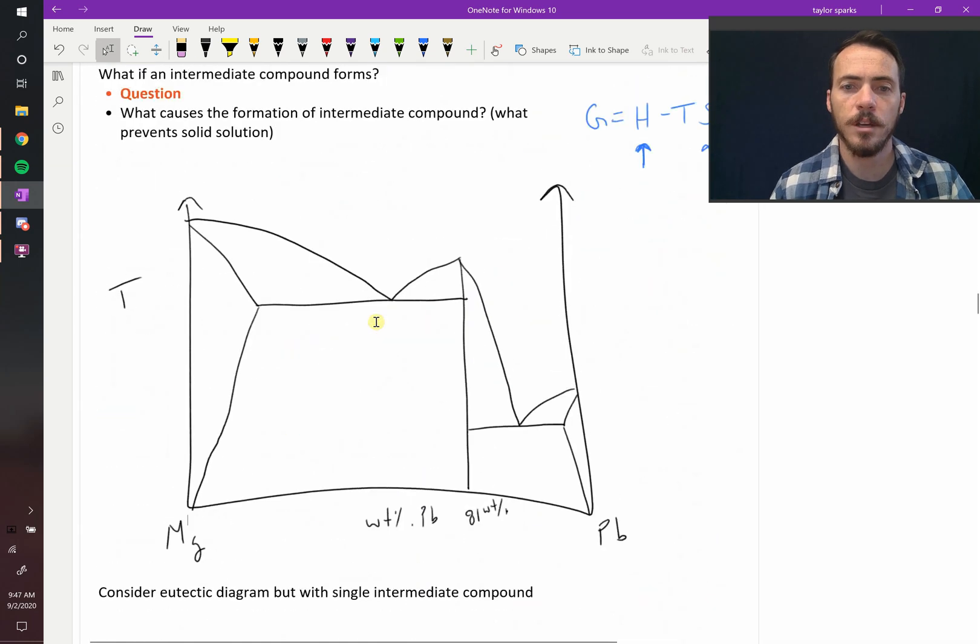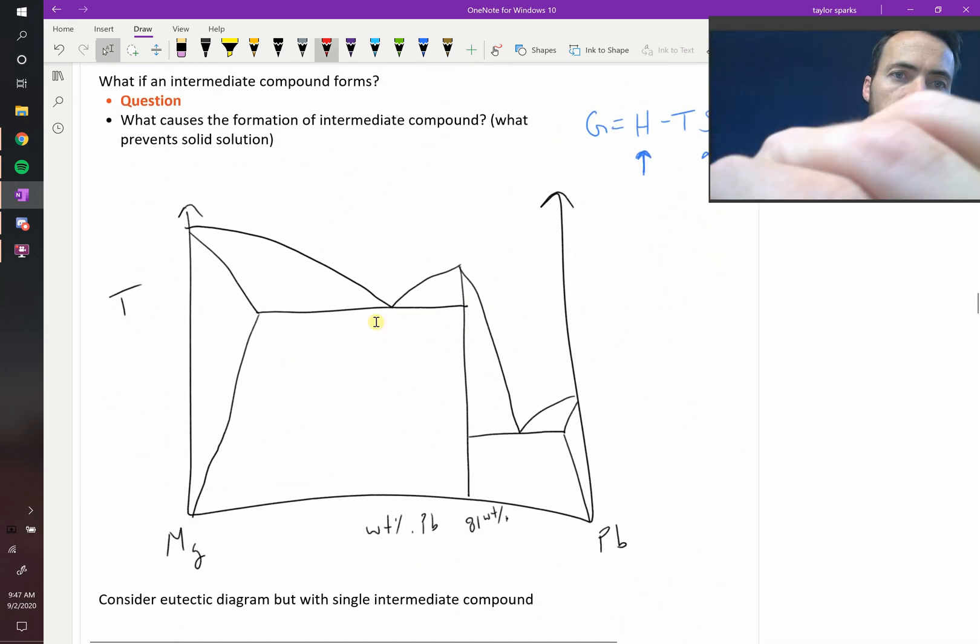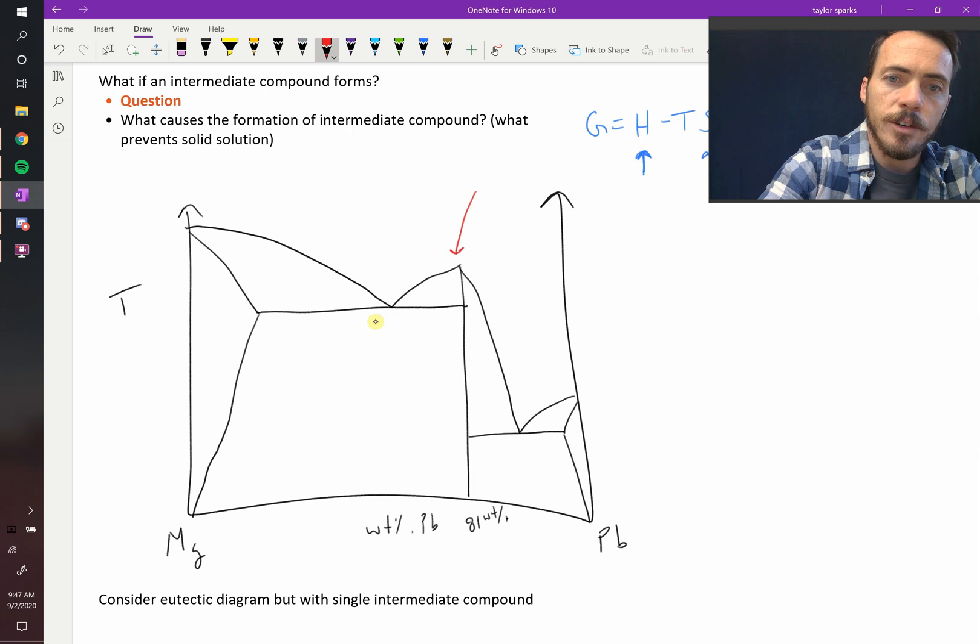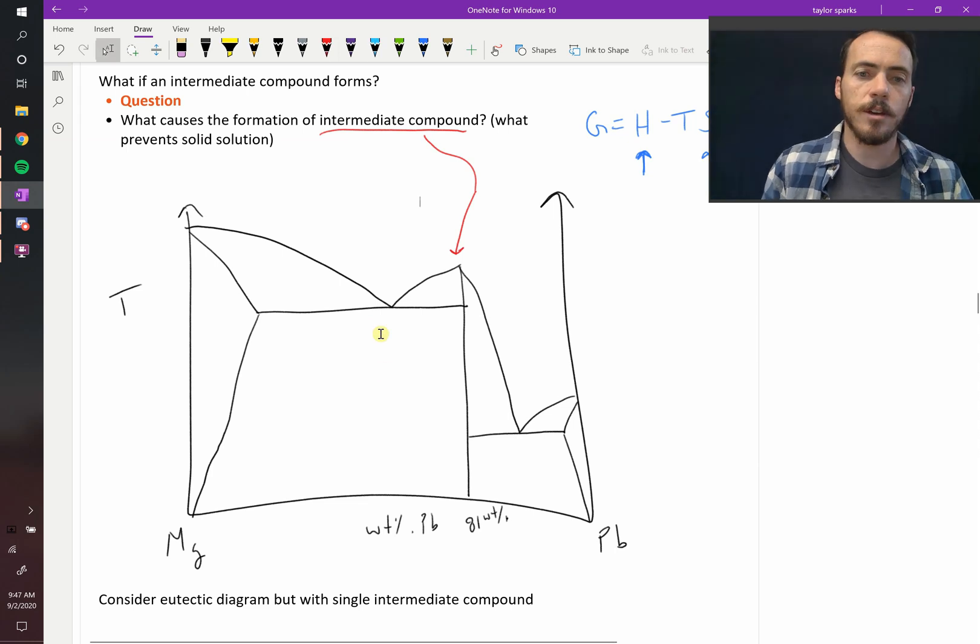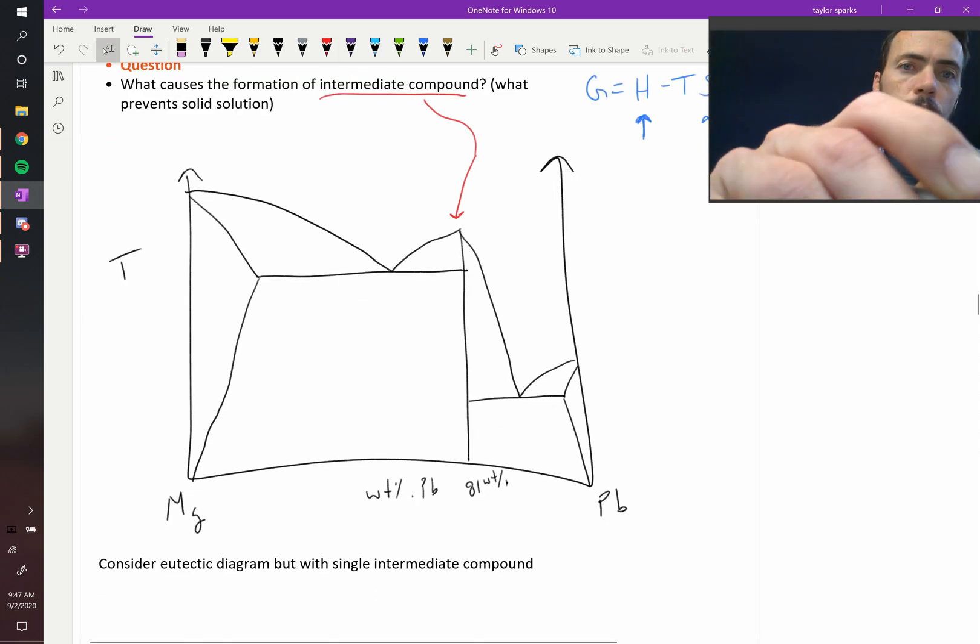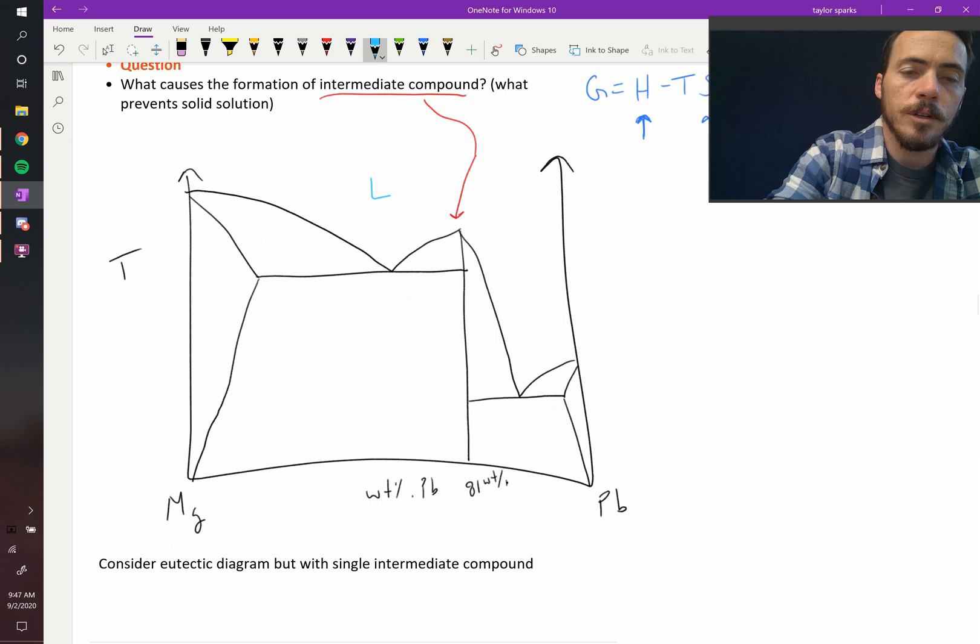So this looks like we took two of our binary eutectic diagrams from up here and we just smooshed them back to back to each other by forming this intermediate compound. So this line right there, that is our intermediate compound. That's the intermediate compound that forms.